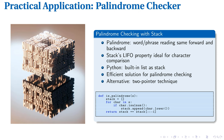Palindromes offer a practical application of stacks. Our Python function uses a stack to check if a word or phrase reads the same backward as forward. It first converts the input to lowercase and removes non-alphanumeric characters, then pushes each character onto the stack. The last-in, first-out property is key here — by comparing the original string with characters popped from the stack, we effectively compare it with its reverse. This method has O(n) time complexity. However, the two-pointer technique, which compares characters from both ends simultaneously, can be more memory efficient for very long strings. Both methods have their merits, and choosing between them depends on specific requirements.